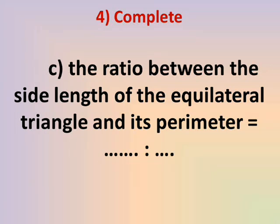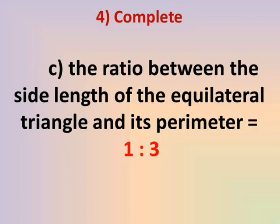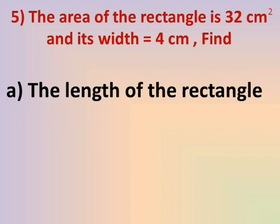Number C: The ratio between the side length of the equilateral triangle and its perimeter. The perimeter of an equilateral triangle equals side × 3, since all three sides are equal in length. The ratio between one side to three sides is 1 to 3.